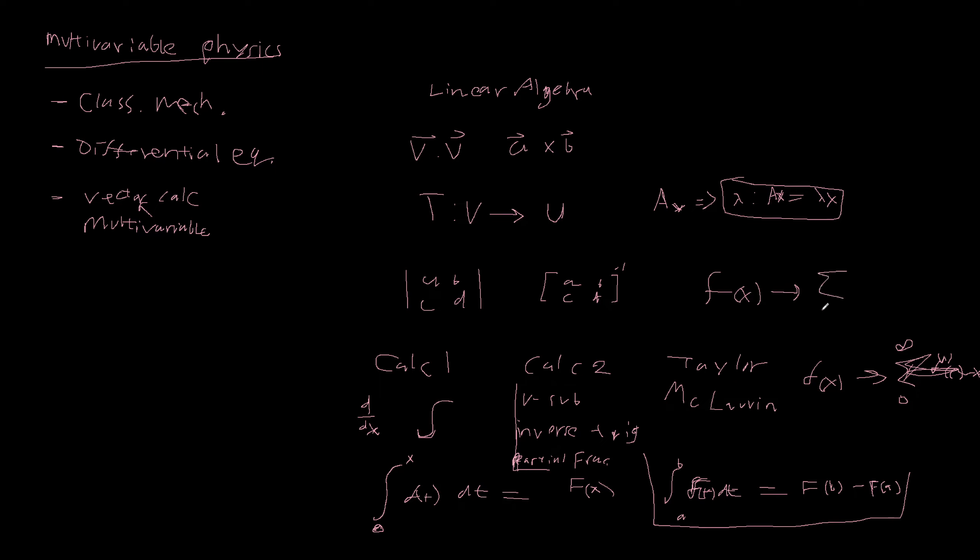We can turn this into an infinite sum of F, the nth derivative of F at C, times X minus C to the power of N over N factorial. And then this is the Taylor series, centered at C. And McLaurin series is when C is equal to zero. That's what that is.